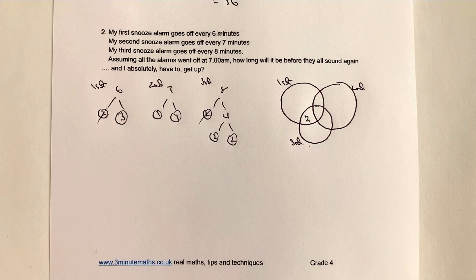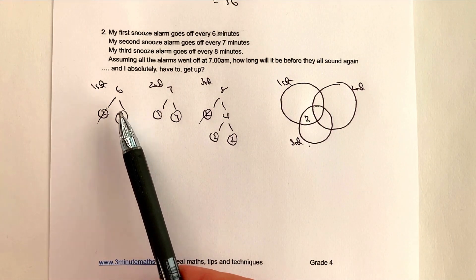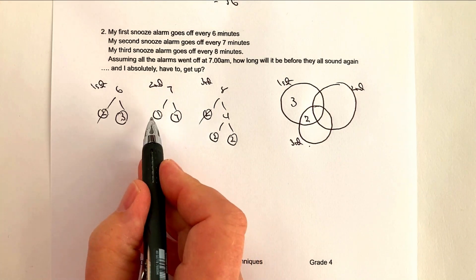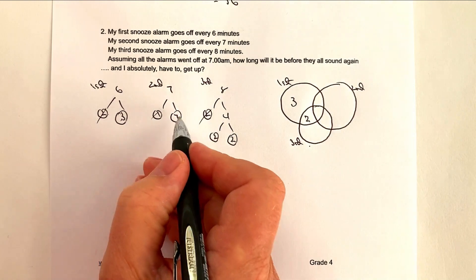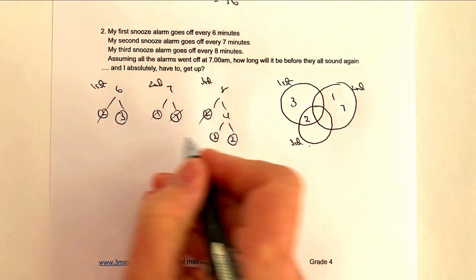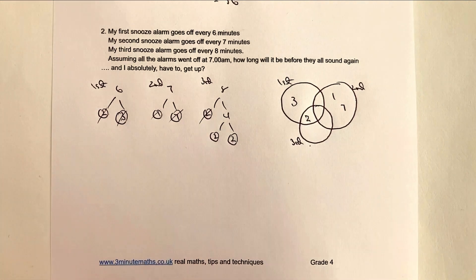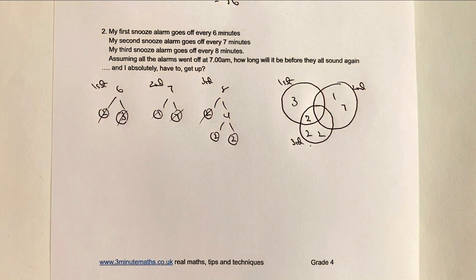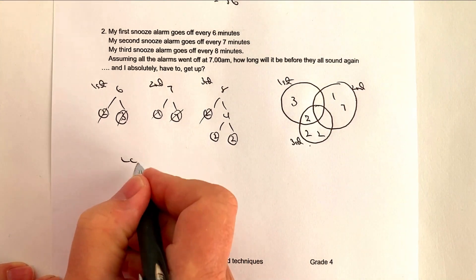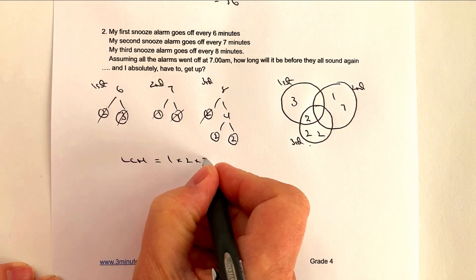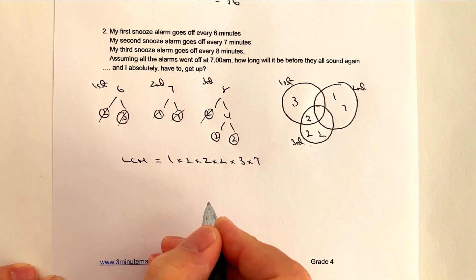Let's look at what remains. The first alarm has a 3 from the 6-minute snooze, which goes in its section. The second alarm has 1 and 7 — we can effectively use 1 and 7 there. And then the third alarm has 2 and 2 remaining in its set. If you're not sure, have a look at some of the earlier videos.